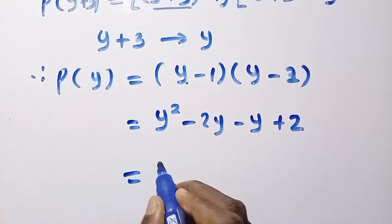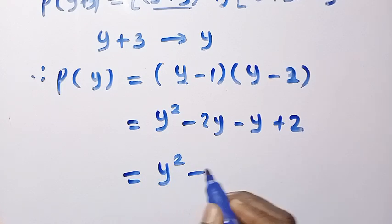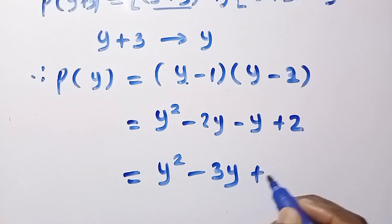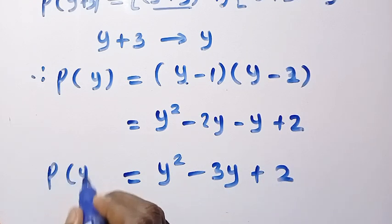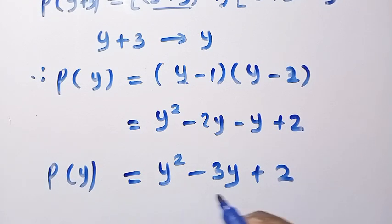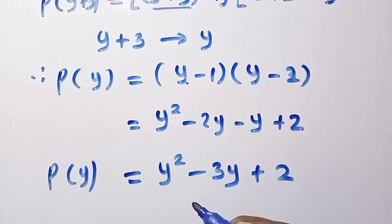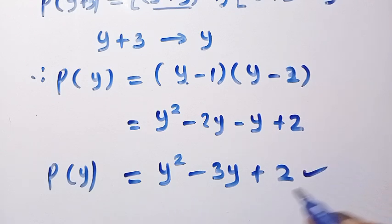Then after having this, we have y squared minus 2y minus y, that is minus 3y, then plus 2. This is for P of y. So this makes sense. Initially, we have plus and now we have negative. Just a slight difference. So here is the first method to solve this.